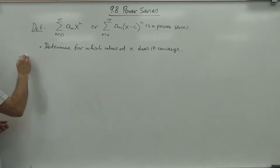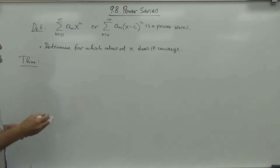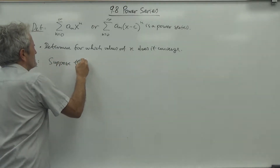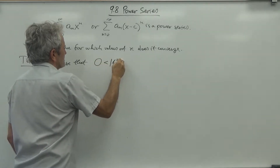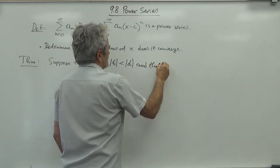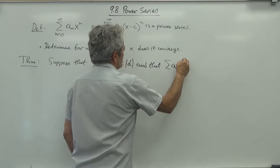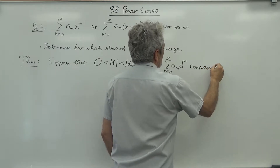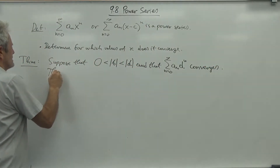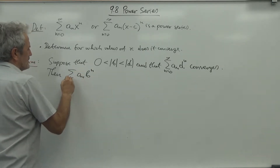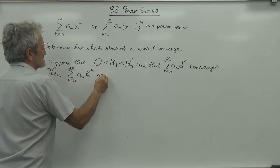Here is the main theorem. Suppose that 0 is less than the absolute value of x, less than the absolute value of b, and that the sum of a_n times b^n from n=0 to infinity converges. Then the sum of a_n times x^n from n=0 to infinity also converges.